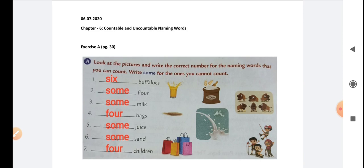There are six, so we can count the buffaloes, so we can say six buffaloes. Question number two: dash flour. Flour, in Hindi we call it atta. Can we count the flour like one atta, two atta, three atta? No, so we have to use the word 'some'.